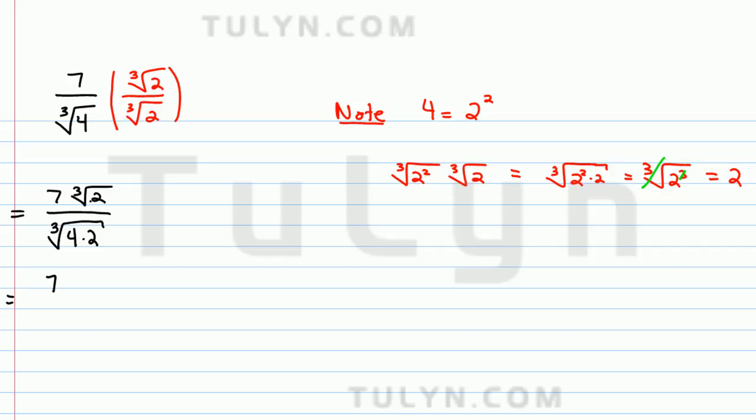Now in the top, since 7 and cube root of 2 aren't really like terms, there's no way we can combine them.